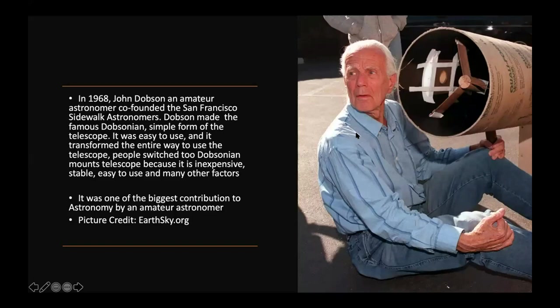Astronomy can be done professionally or as an amateur. There was a guy known as John Dobson, in 1968, who made the first cheapest telescopes — the Dobsonian telescopes. If you see this picture on the right-hand side, notice that the telescope is made up of wood, tapes and everything. This was one of the biggest contributions to astronomy by an amateur astronomer — making one of the cheapest, yet very stable and easy-to-use telescopes. That is the Dobsonian telescope.